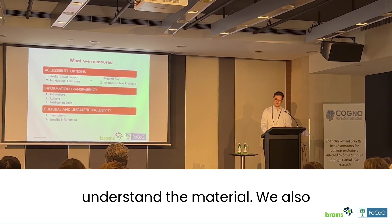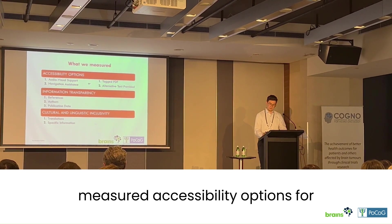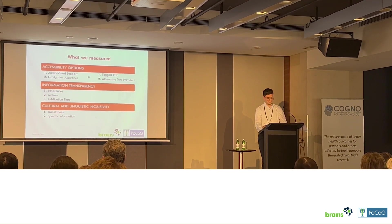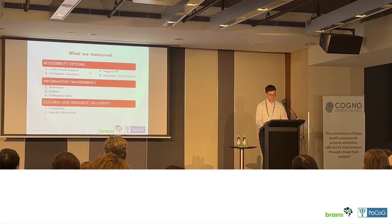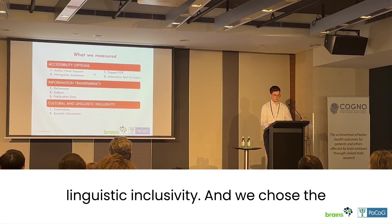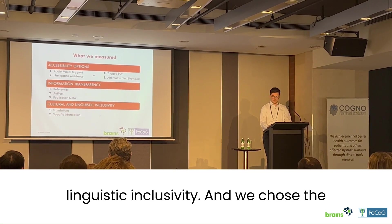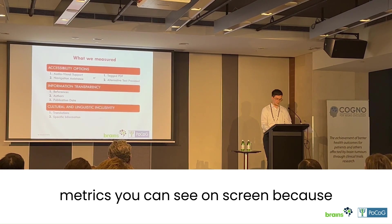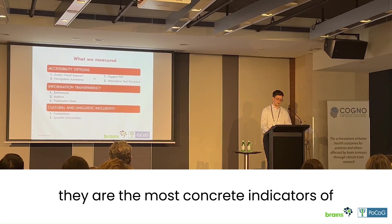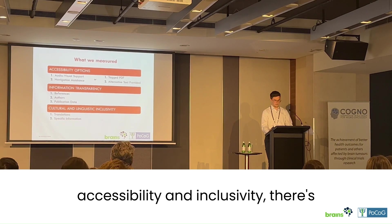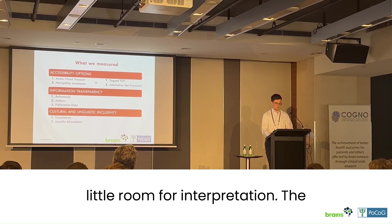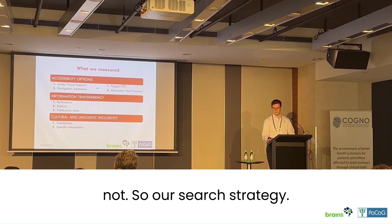We also measured accessibility options for websites and downloadable material, information transparency, and cultural and linguistic inclusivity. These metrics are the most concrete indicators of accessibility and inclusivity — there's little room for interpretation; the features are either present or they're not.